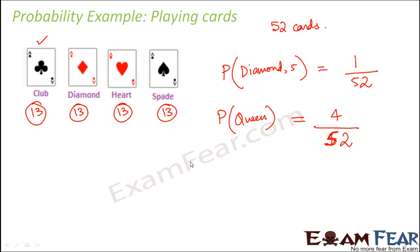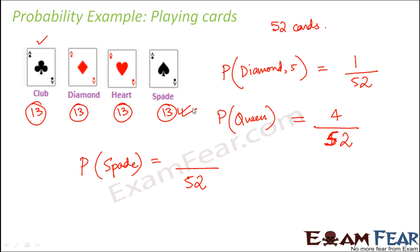Now, what will be the probability of getting a Spade? Here I am not specifying whether it should be a Queen or 5 or whatever — I am just asking what is the possibility that the card is a Spade. The total possible outcomes still remains 52. How many cards are Spade in a pack of 52 cards? As mentioned before, there would be 13 cards for Spade — one would be Queen, one King, one Jack, one 3, 4, 5 etc. We only want the probability of getting a Spade, so the total possibilities of getting a Spade is 13. Therefore, the probability of getting a Spade would be 13 divided by 52.